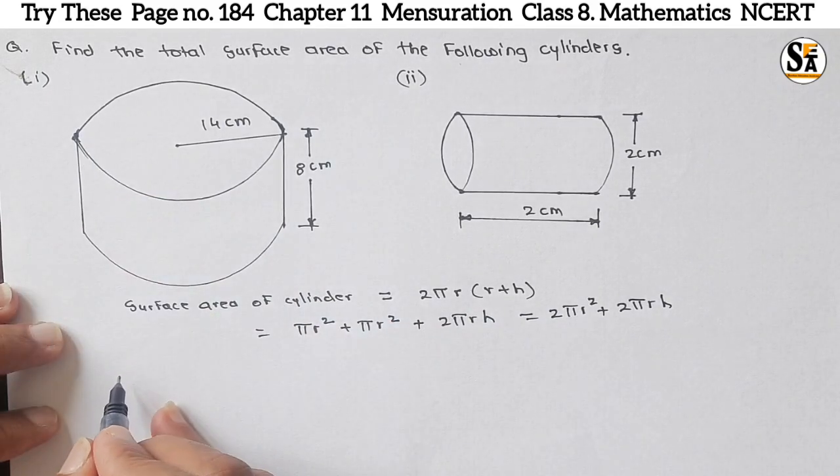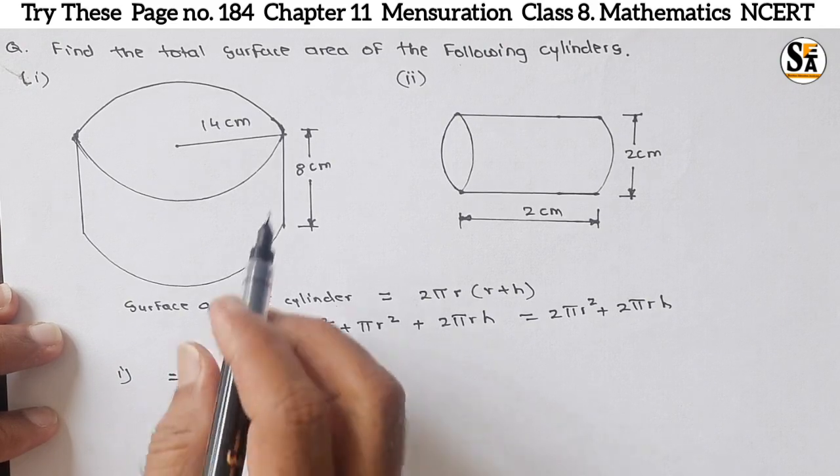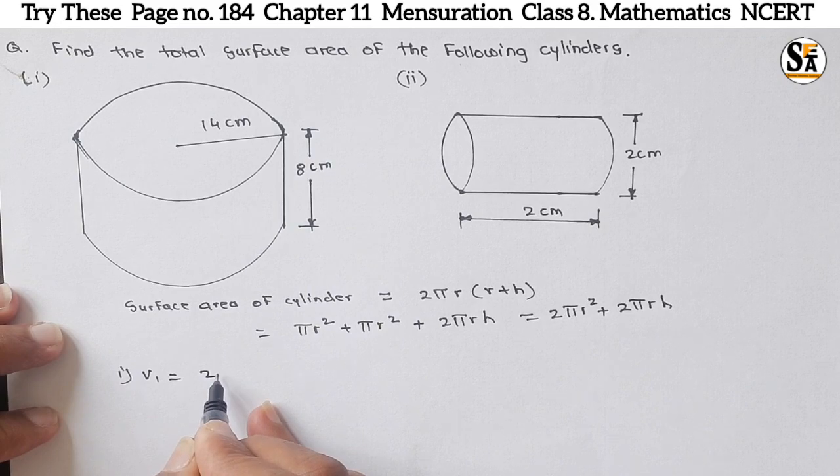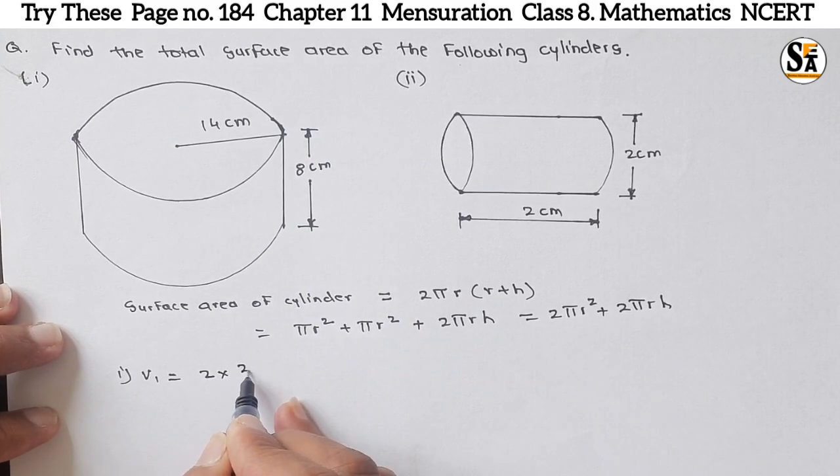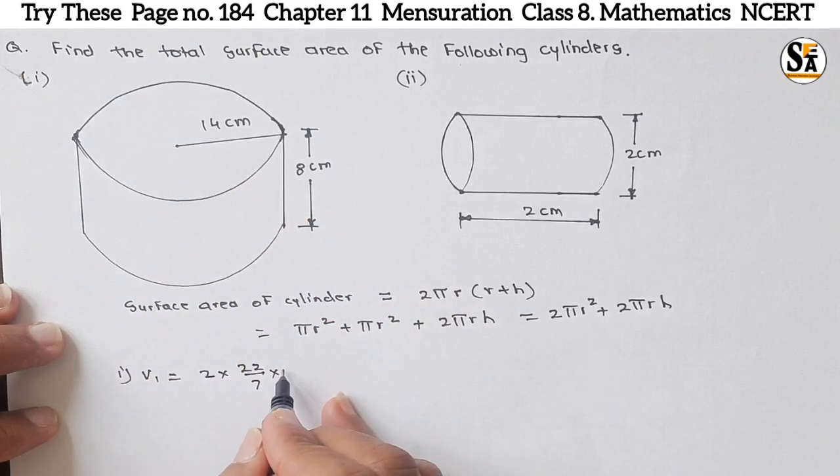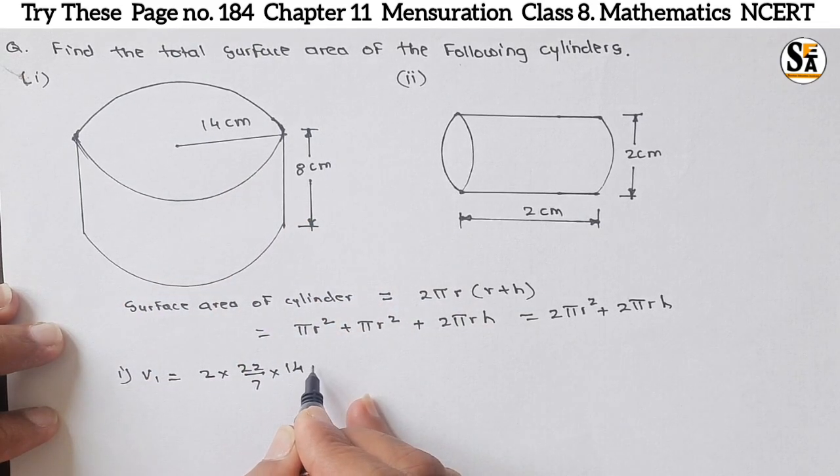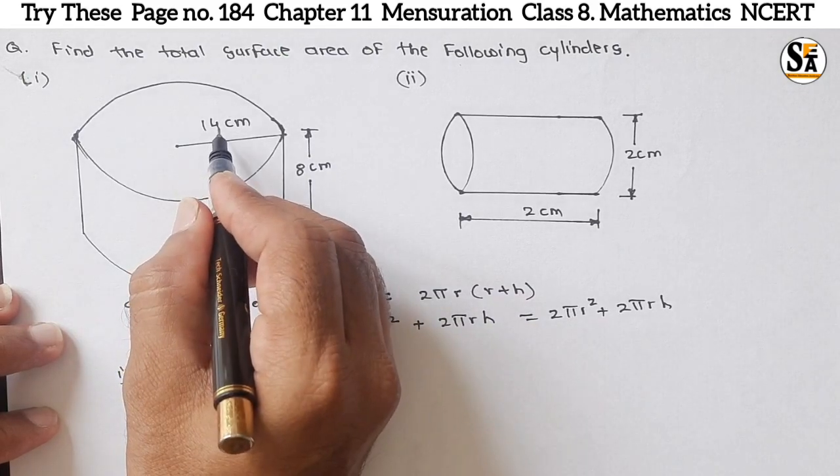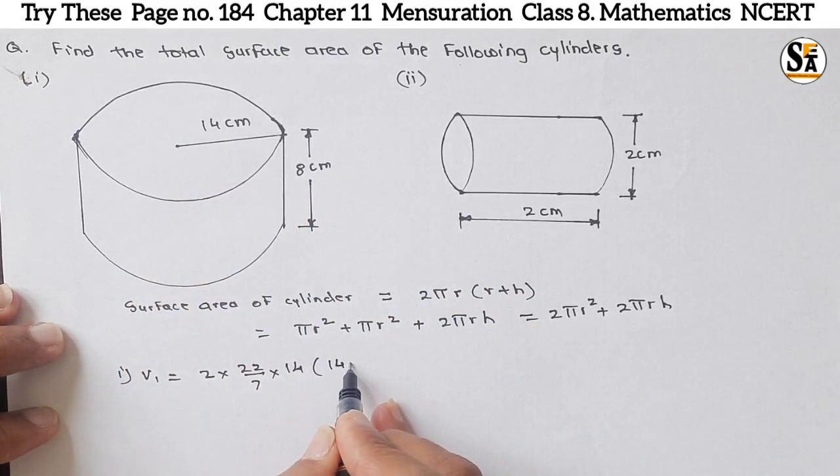Now first case, if we write these values in this formula: S₁ equals 2 × (22/7). Then r is given as 14 cm. So write here 14 cm into bracket (r+h), r is 14 cm, so 14 + 8.